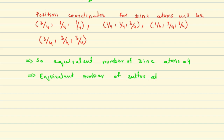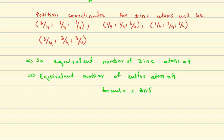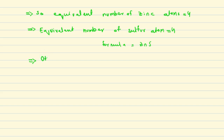The number of atoms in the unit cell is equal to 4. As we see in the formula, we have a 1-to-1 ratio, so we will get zinc sulfide.